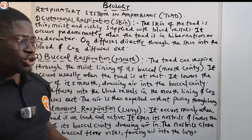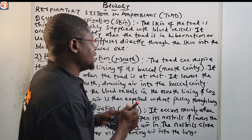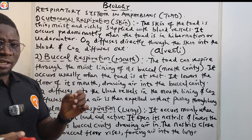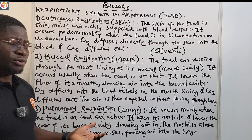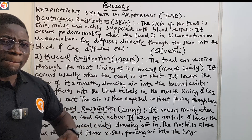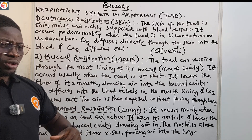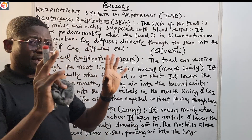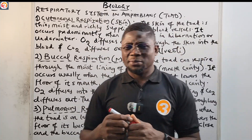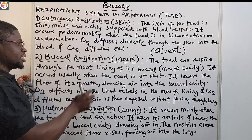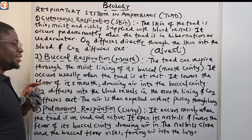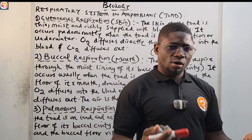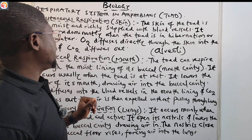Gaseous exchange takes place in the alveoli of the lungs. Air is expelled through the contraction of the toad's muscles. So the toad uses three distinct methods: continuous respiration (skin), buccal respiration (mouth cavity), and pulmonary respiration (lungs) — each under different conditions. Examiners set questions on this, so it is necessary that you know and understand all three.